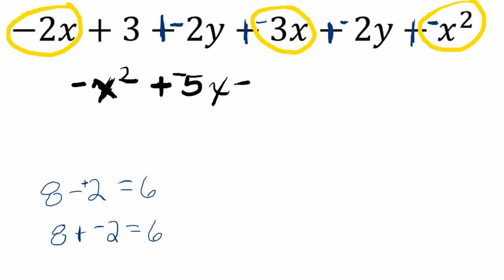3 is all by itself, poor 3. But then we have negative 2y and plus another negative 2y there. So altogether we have, we're adding negative 4y.